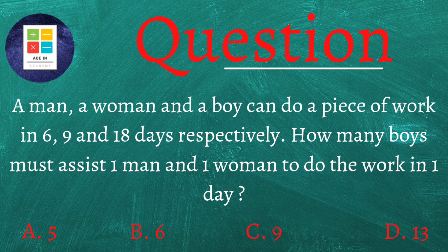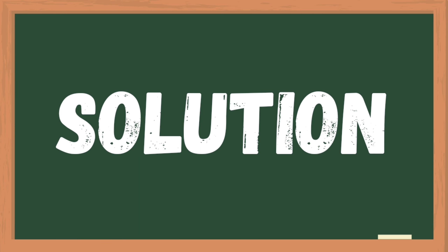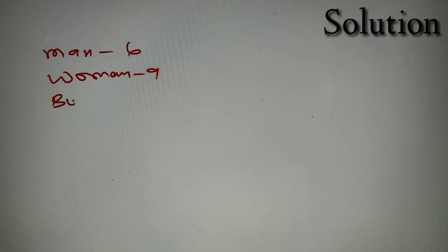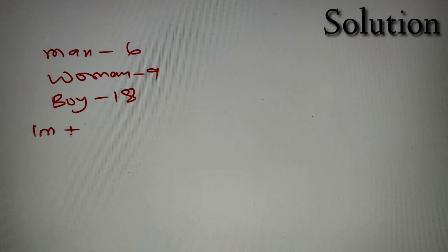Let's see our solution. According to our given question, a man can do a piece of work in 6 days, a woman can do the piece of work in 9 days, and a boy can do a piece of work in 18 days. We have to find the number of boys that will assist one man and one woman to complete the piece of work in one single day.